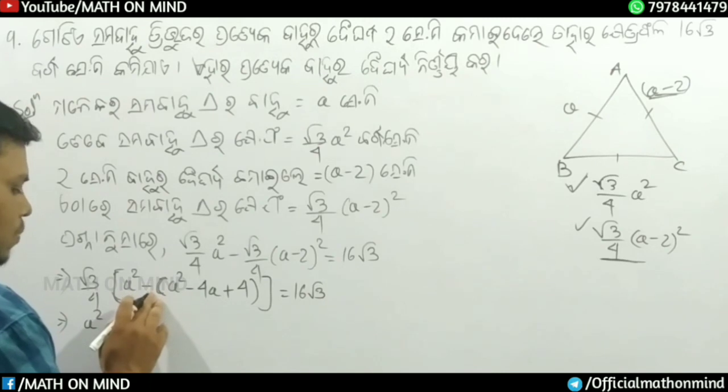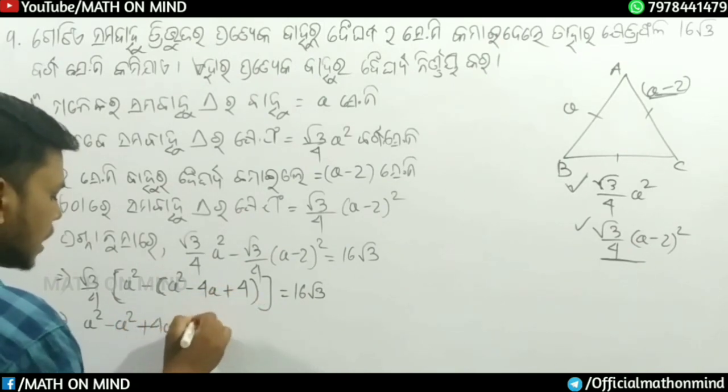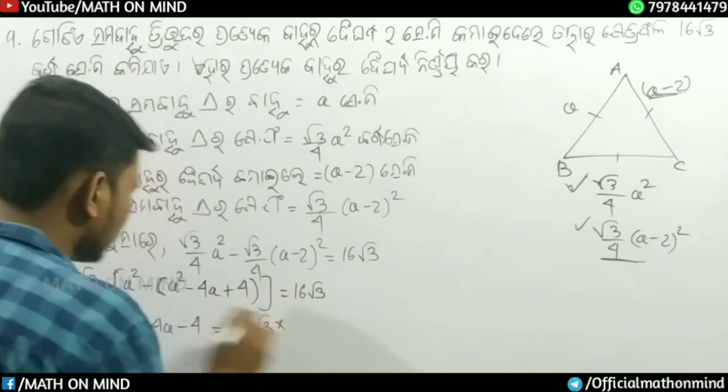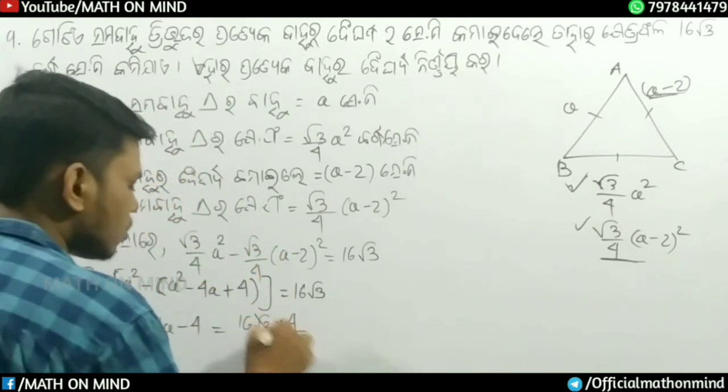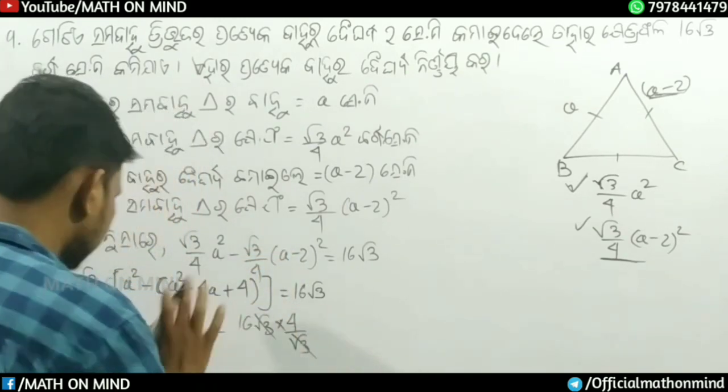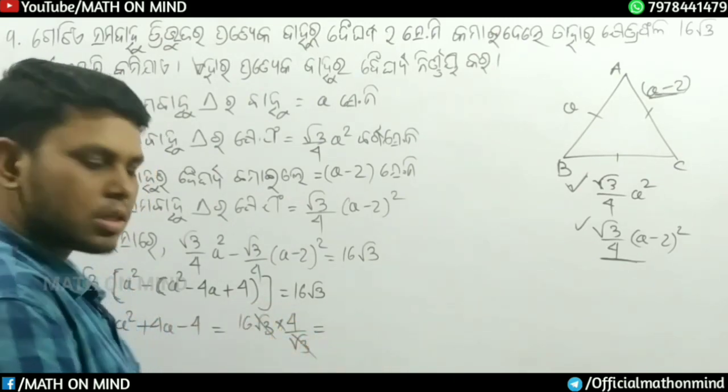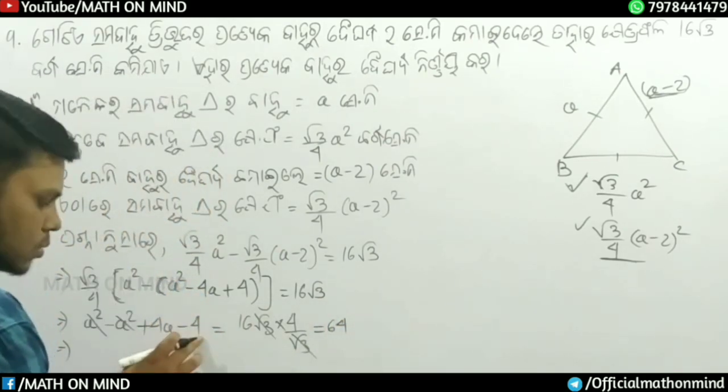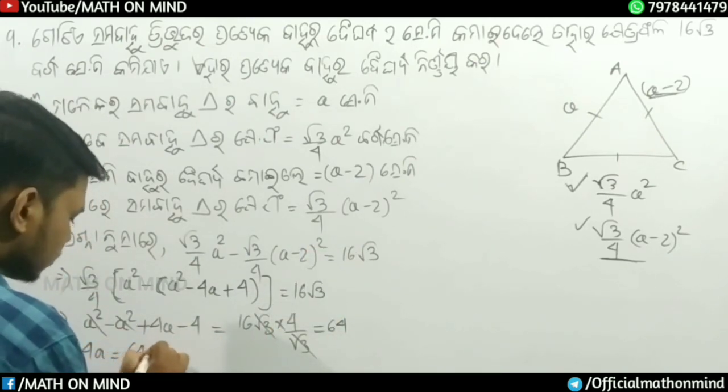Simplifying the equation: root 3 cancels, leaving 16 into 4. We get minus a squared minus 4a plus 4 minus 4 equals zero on one side. This becomes: 4a equals 64. The a squared terms cancel out, giving us 4a minus 4 equals 64 plus 4.